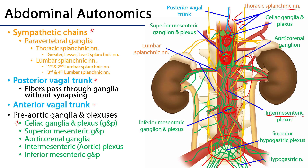One thing not represented on this slide is the anterior vagal trunk. The vagal trunks enter the abdomen through the esophageal hiatus and have a very close relationship with the esophagus. The anterior vagal trunk comes in on the anterior portion of the abdominal esophagus and sends branches directly to the stomach as well as the liver and gallbladder.